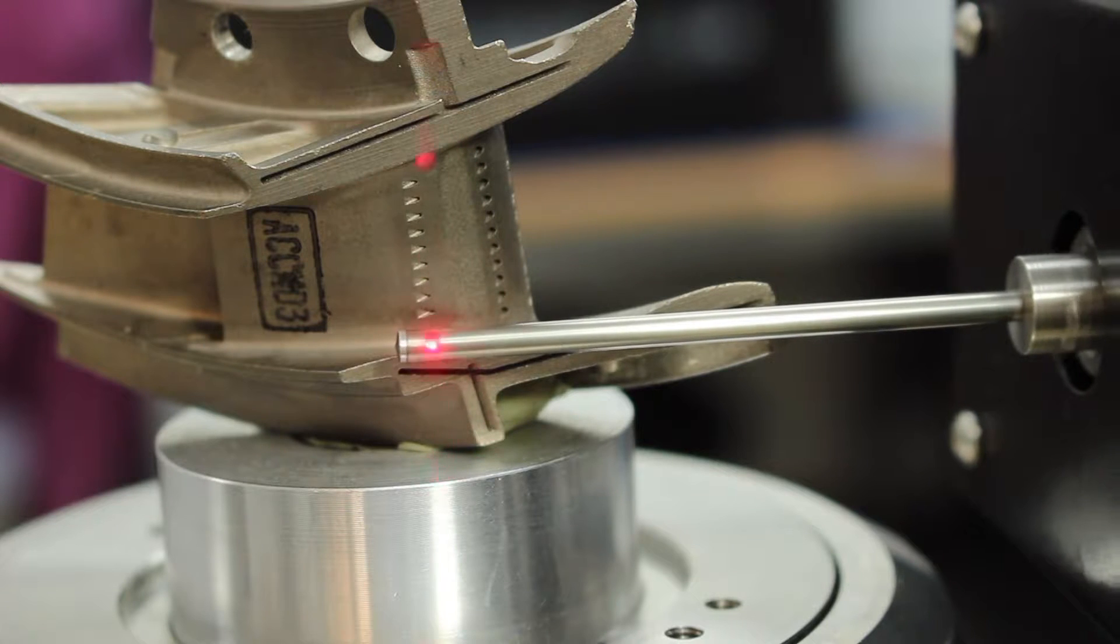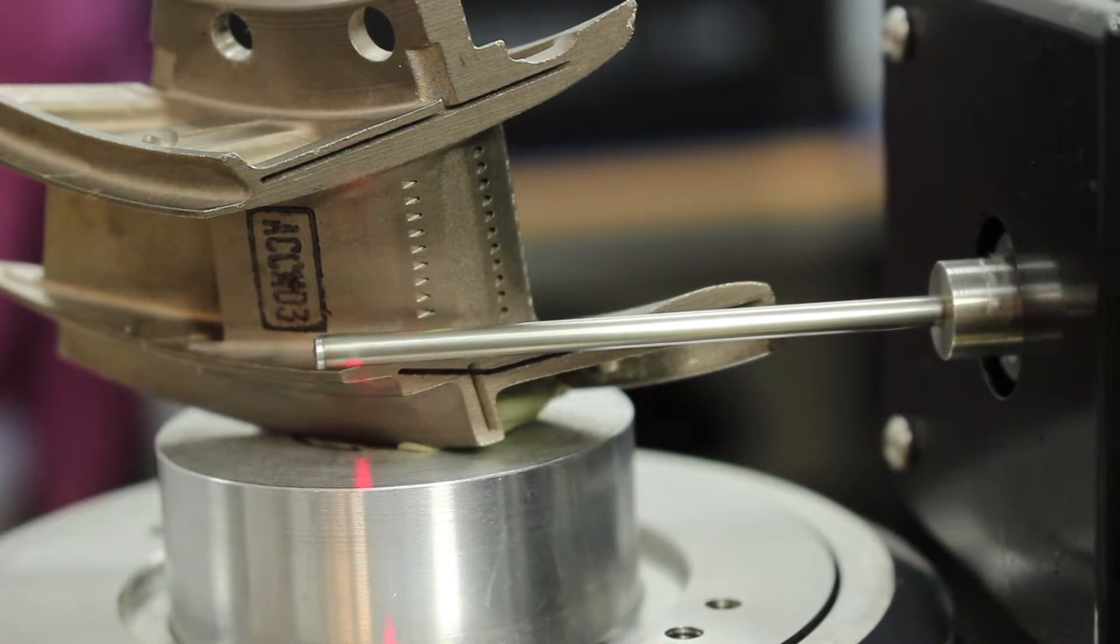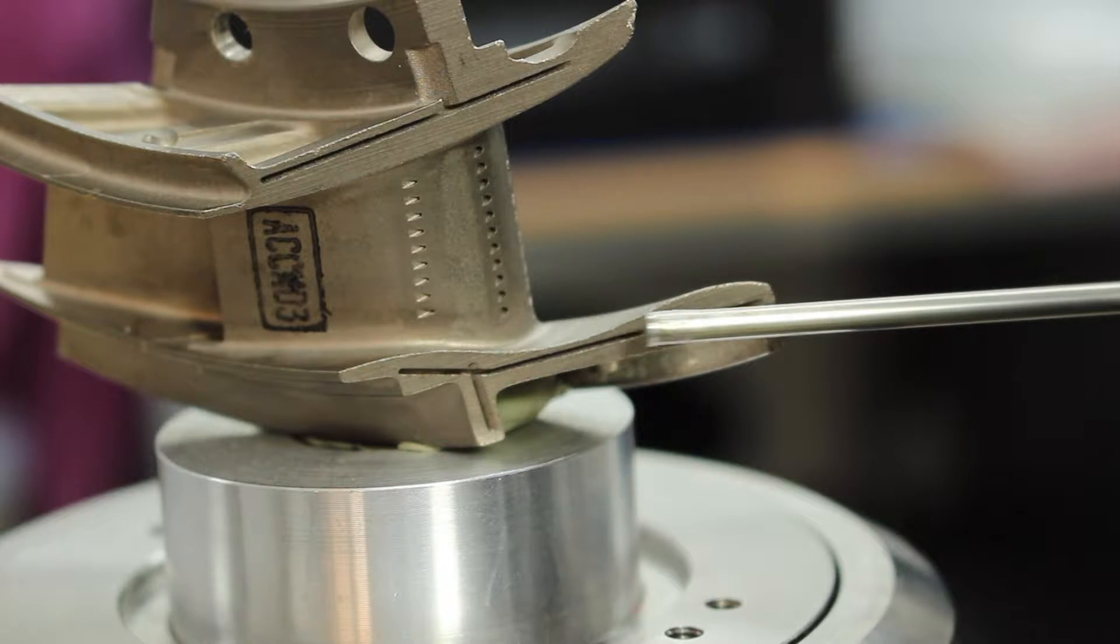Unlike tactile probes, the RS2 uses a fiber-based light beam to do a non-contact inspection of the complete geometry of the part.